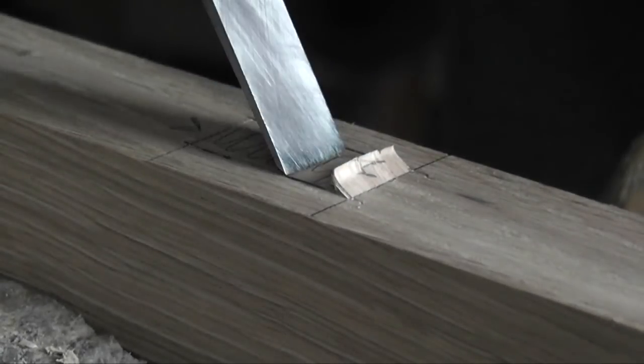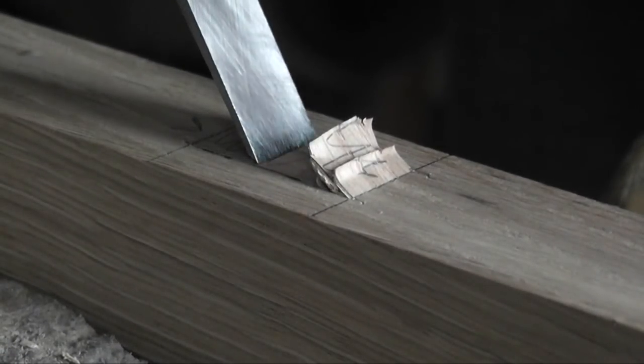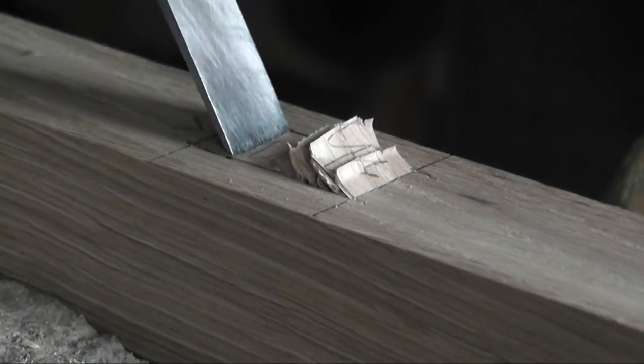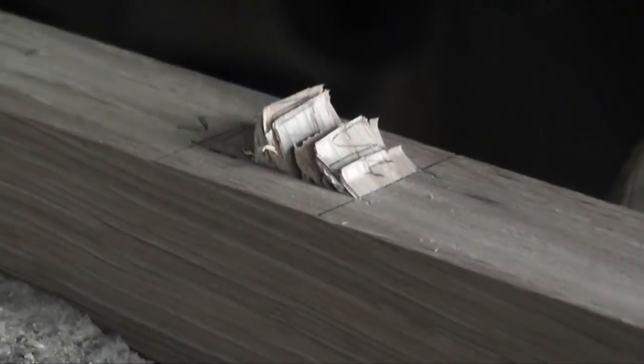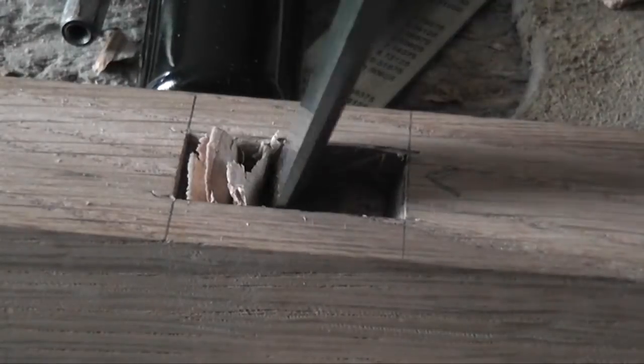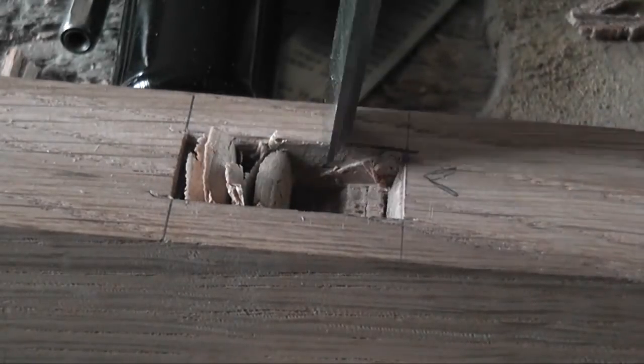I used a chisel for this first mortise that I made. Just because the chisel was pretty much the right size for the mortise so I thought okay I'll do that. But it ended up being kind of awkward, taking quite long so I used a bit and brace for the rest of it and cleaned it up with the chisel which went faster.